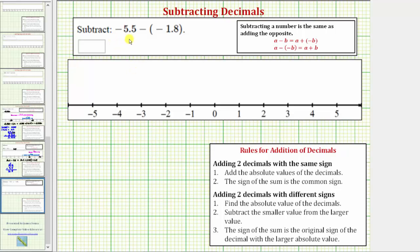We want to subtract and we have negative 5.5 minus negative 1.8. To find this difference we'll write the difference as a sum and then find the sum using the formal rules for adding signed decimals as well as show the sum on the number line.